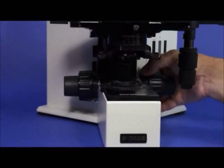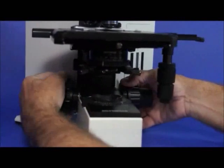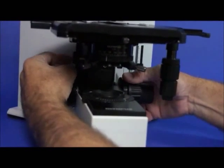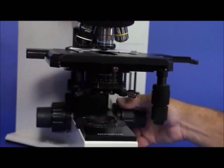There's a tension adjustment here on the right side and a stage brake on the left side, which prevents you from racking your specimen material into the objective lens.